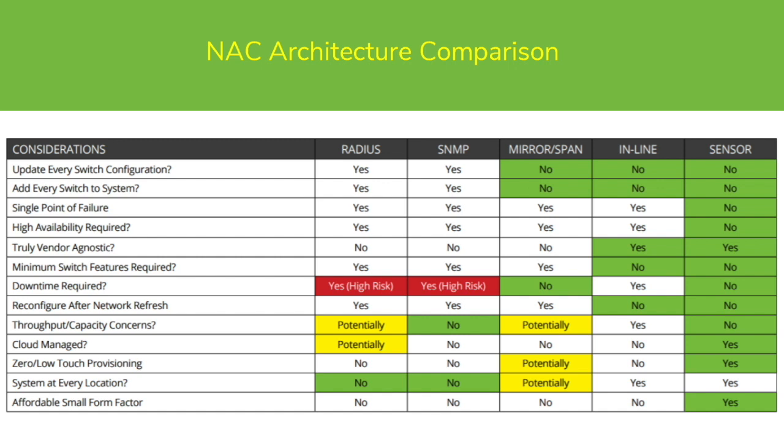90% — or almost 100% — of your NAC integrations are typically going to fall under one of these categories. This is more of a network architecture matrix; it gives you an idea of, depending on which architecture you choose, what kind of challenges you may or may not be facing. They all have their pros and cons.